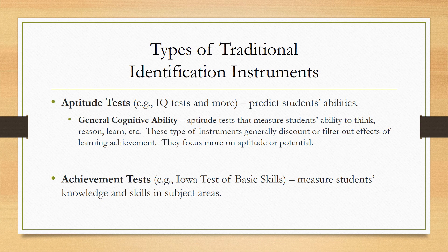Within aptitude tests, general cognitive ability tests are special aptitude tests that measure students' ability to think, reason, and learn. They generally discount or filter out the effects of learning and achievement, focusing on aptitude or potential. Achievement tests, by contrast, measure students' knowledge and skills — things they have been taught. The Iowa Test of Basic Skills is a commonly used achievement test, usually in math and reading, and state tests are all achievement tests because they measure progress against standards.